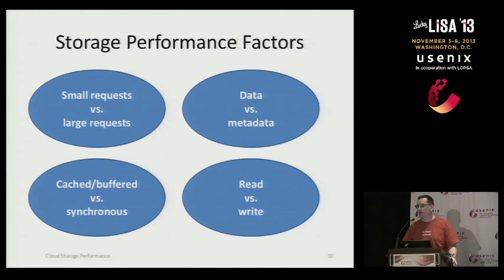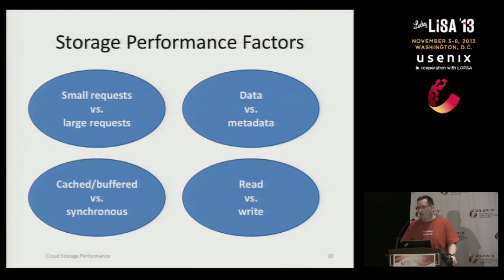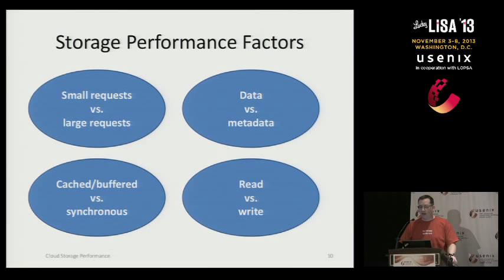One issue we've hit in GlusterFS is that we make heavy use of extended attributes for many things. It turns out that people who write local file systems beneath us typically hadn't expected extended attributes to be used this much, and it became a performance bottleneck. They could handle reads and writes all day but choked on xattr requests. All of these factors play into a much more complex picture for file-level operations than for block operations, which tend to be simpler — they don't overlap and have less metadata.